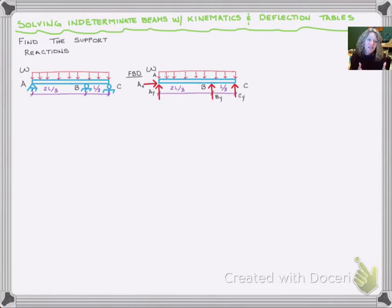What we have here looks like a simply supported beam, a pin at A and a roller at C with a uniform load, but there's this extra roller at B. When we draw our free body diagram, we have one too many reactions to be statically determinate.